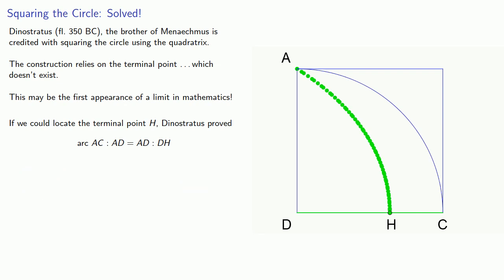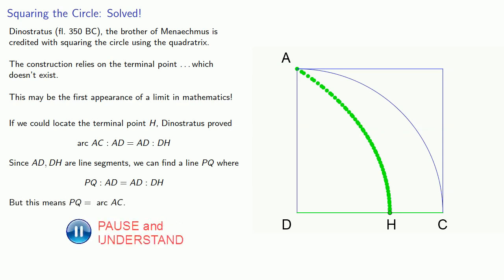Now, since AD and DH are line segments, we can find the line PQ, where PQ is to AD, as AD is to DH, but this means that PQ is equal in length to arc AC. And so this gives us a line that's equal in length to one quarter of the circumference of a circle, and then we can use this to square the circle. We'll leave those details to the viewer.